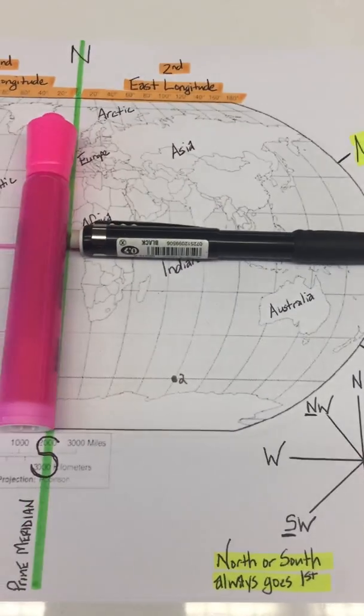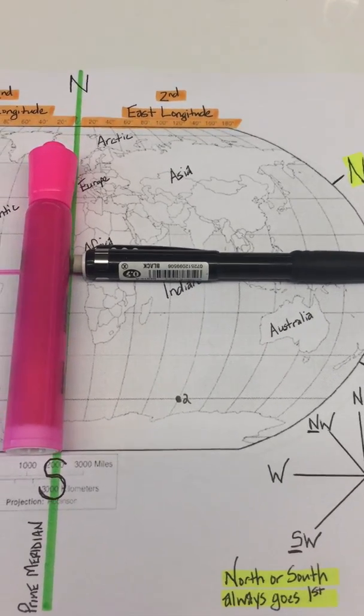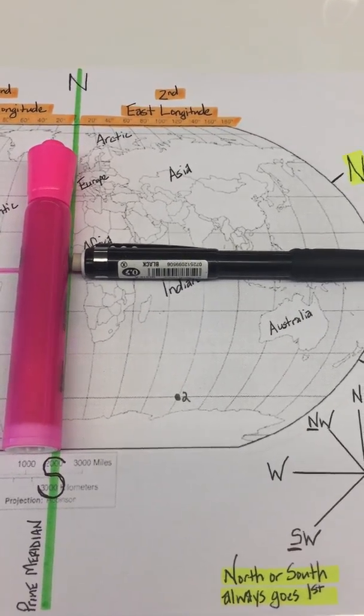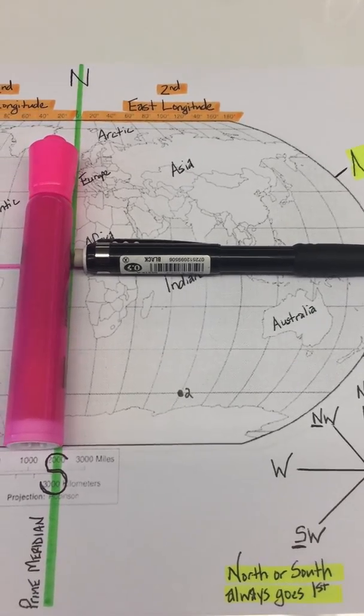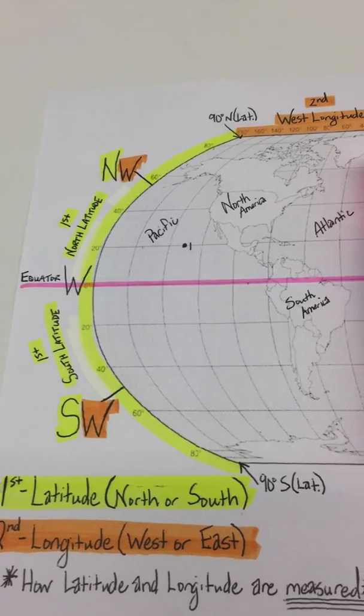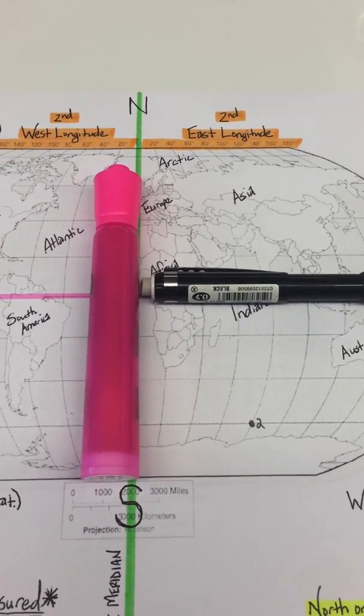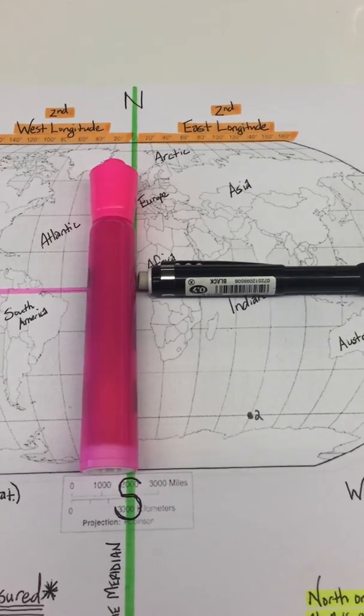Now, going back to this, I have to find longitude direction first. So if I need to find point number two longitude direction, remember, longitude can either be measured in west or east, and that is all. So really, I have to focus on the pink highlighter, which represents my prime meridian.